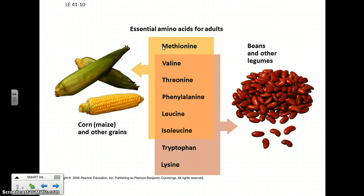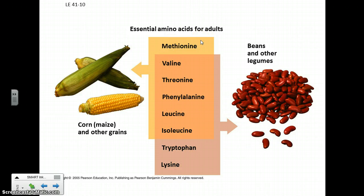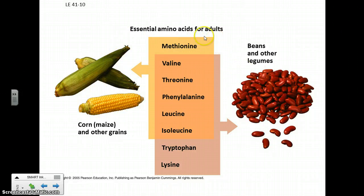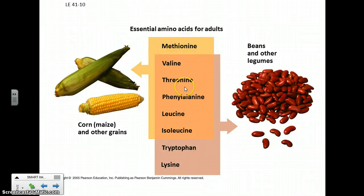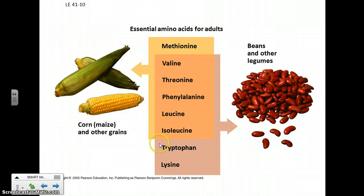We need amino acids to build up proteins and for other purposes, and there are 20 of them in total. Eight are known as the essential amino acids because your body can't synthesize them. Your body can make the other 12 from raw materials, but not these eight. We have corn and beans shown here because if you're a vegetarian, you need to get these eight essential amino acids from at least two different plant sources. If you eat meat, you get all 20 from chicken, beef, or fish. If you're a vegetarian and don't get all eight, you will be malnourished.